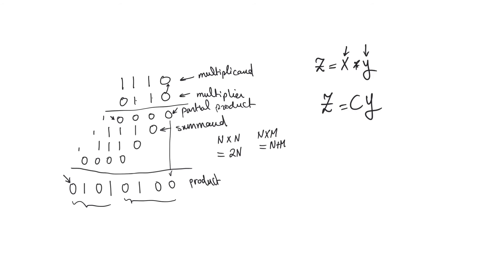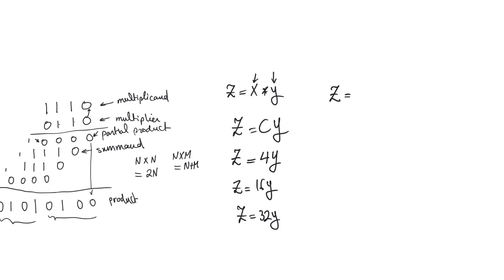Consider some of the more trivial cases. If z equals 4y, that is not a multiplier — it is just a shift by two bit positions. If z equals 16y, that is a shift by four bit positions. If z equals 32y, that is a shift of y by five bit positions. It is a complete waste of resources to use a full multiplier for these. This is even valid for products that are not powers of two: z equals 5x is just 4x plus x, so that is a shift by two bits plus an adder. And z equals 31y is 32y minus y, which is again a shift and subtract.